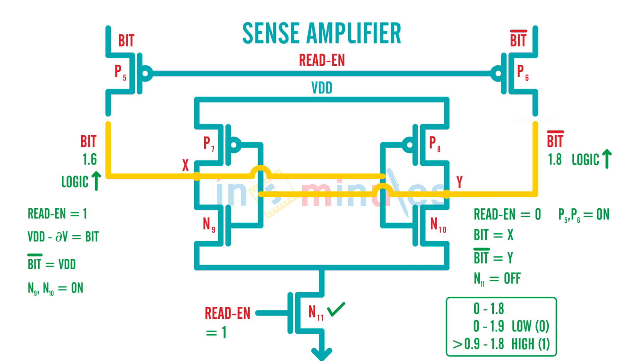We know n9 is getting y at its input, that's correct, and n10 is getting x at its input. So in simple words, n9 is getting 1.8 at its input and n10 is getting 1.6 at its input.